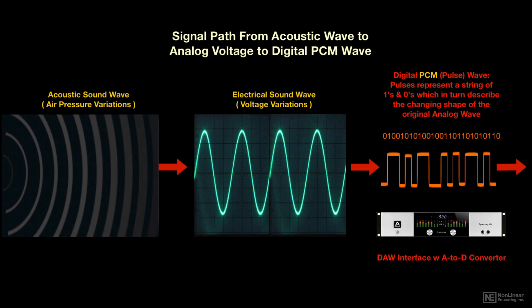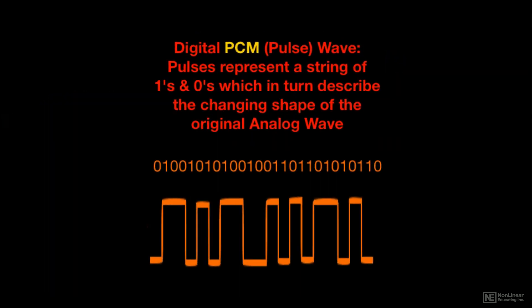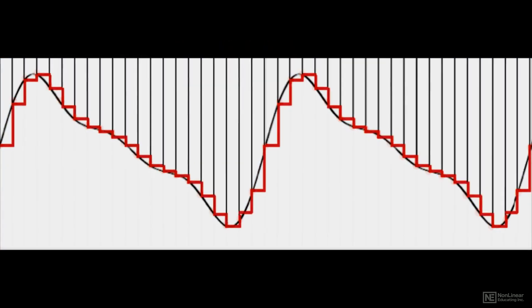When a digital recording is made — that is, when an analog audio wave is converted to a digital wave — the new digital wave is a series of pulses. The pulses describe a string of numbers, which in turn represent samples of the amplitude of the continuous audio wave at discrete points in time.